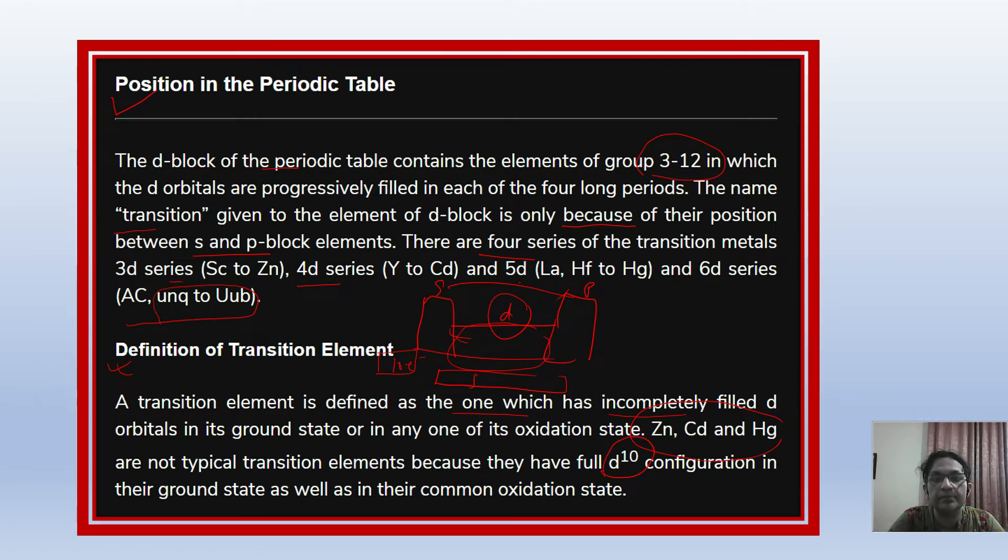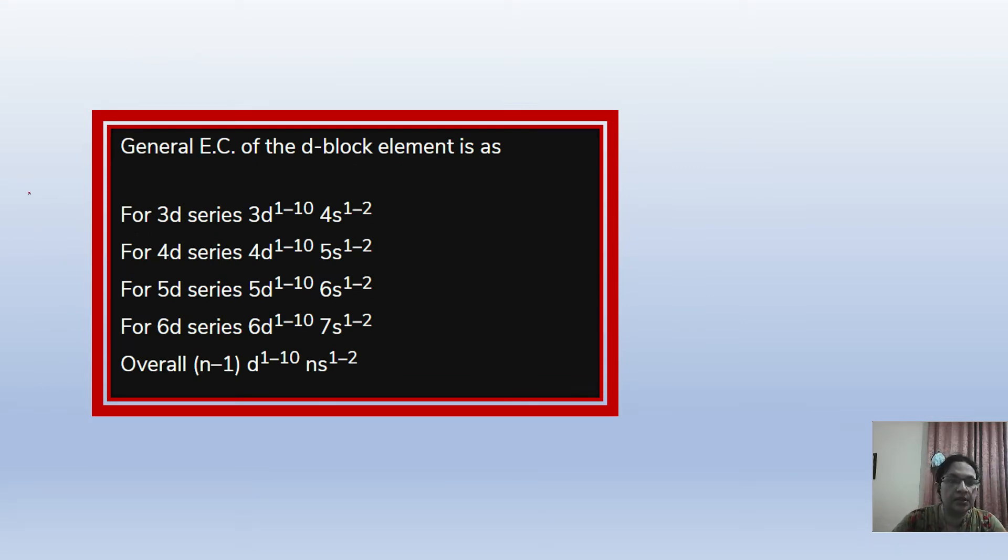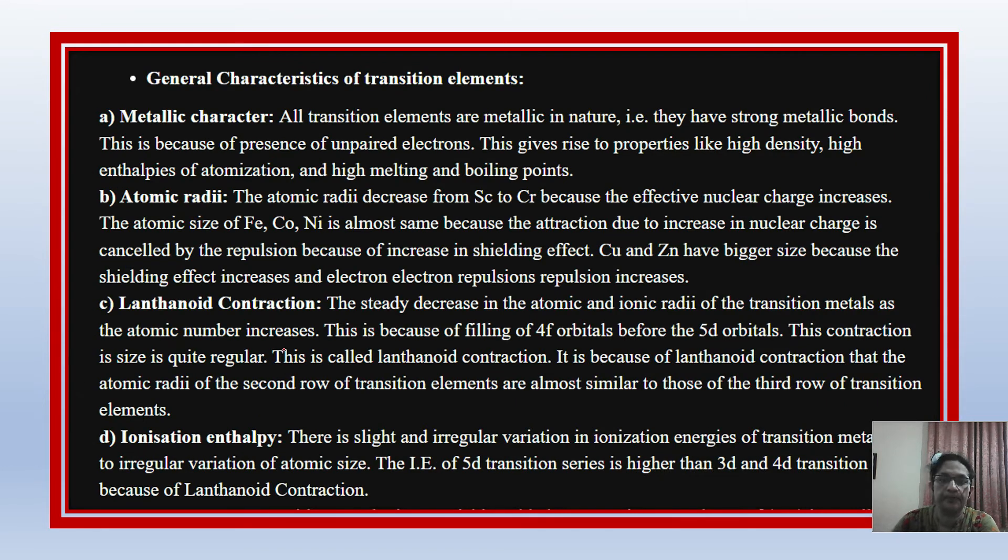Here you can see the electronic configuration. For 3D series, it's 3d^1-10, 4s^1-2. For 4D series, it's 4d^1-10, 5s^1-2. For 5D series, it's 5d^1-10, 6s^1-2. For 6D series, it's 6d^1-10, 7s^1-2. Overall, if you need the general electronic configuration for the syllabus, this is the pattern to remember.